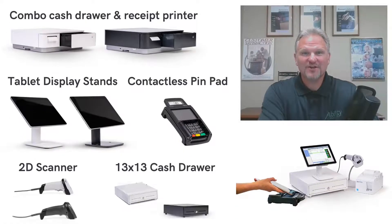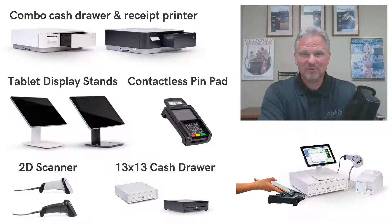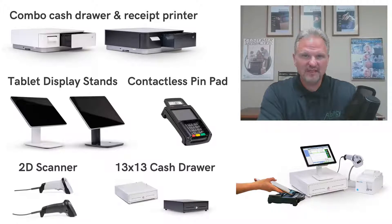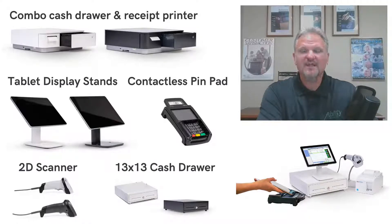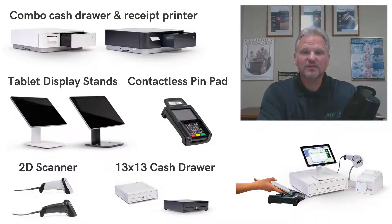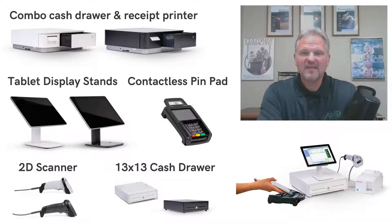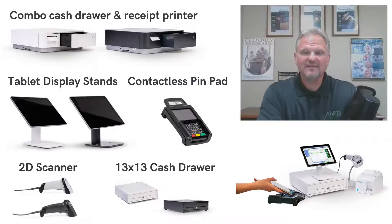Let's talk hardware. The hardware is now available in white — not only the cash drawer and the receipt printer, but also the barcode scanner. Another nice feature is that you can get two smaller options if you don't have a lot of counter space. You can get a 13 by 13 cash drawer, or a combination cash drawer and receipt printer. There are also tablet display stands available in both black and white.